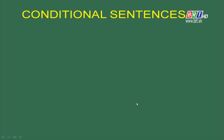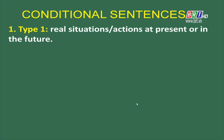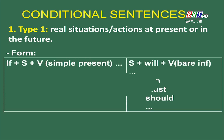Bây giờ cô và các em cùng nhắc lại công thức câu điều kiện loại 1. If clause: If + S + V (present simple). Main clause: S + will / can / must / should / may / might + V (bare infinitive). Kem có thể ghi chép vào vở.